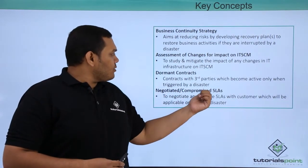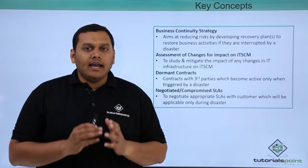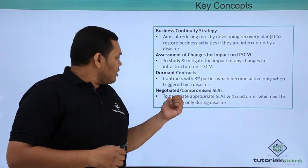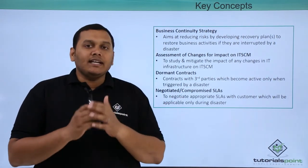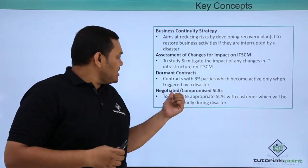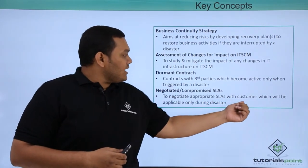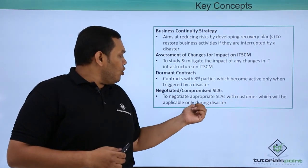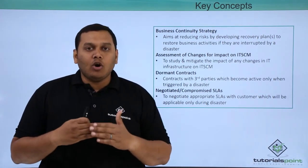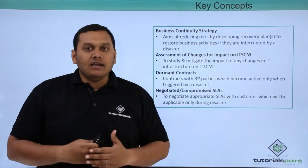Coming to the negotiated and compromised SLA — a normal SLA applies when you get an issue, but when a disaster occurs, the negotiated SLA comes into the picture. This involves negotiating an appropriate SLA with the customer that is applicable only during a disaster, becoming active only when the disaster occurs.